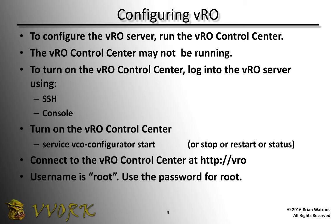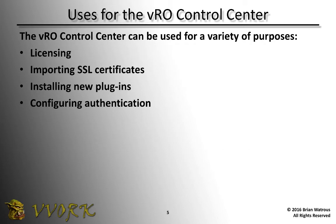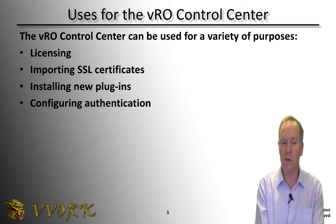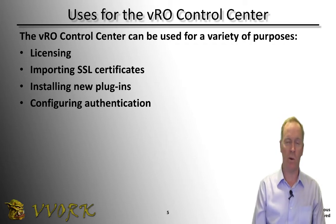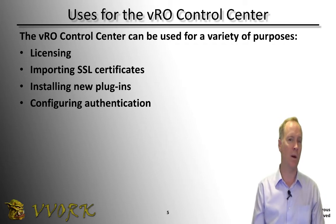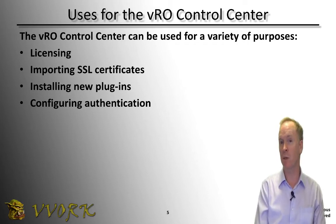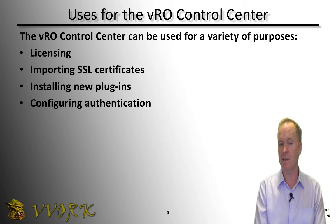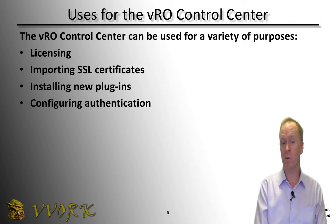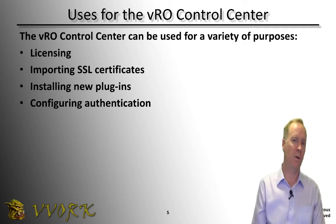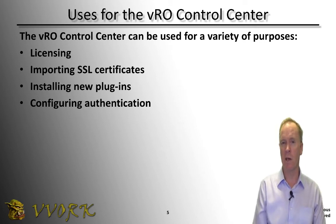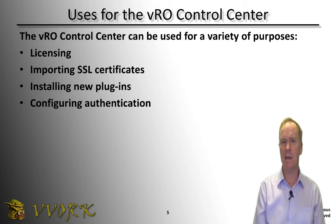Now that we know how to configure Orchestrator, let's talk for a few moments about the types of things that you do with the Control Center. Control Center is the place where you go to license Orchestrator. It's also where you go if you need to import SSL certificates for the servers that Orchestrator is going to be communicating with. Orchestrator likes to do SSL encryption between itself and the external system, so we need their SSL certificates. Installing plugins is done through Control Center, and configuring how Orchestrator performs user authentication is also configured in Control Center. So now that we know how to start Control Center and some of the things it's used for, let's actually perform a demo and see Control Center in action.